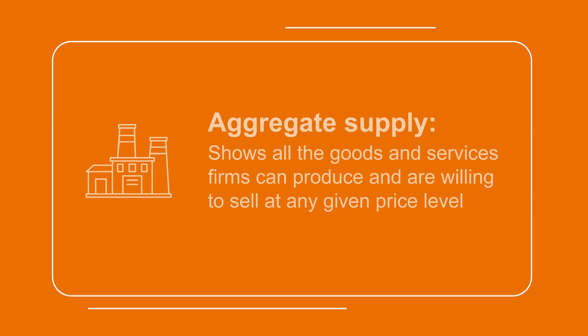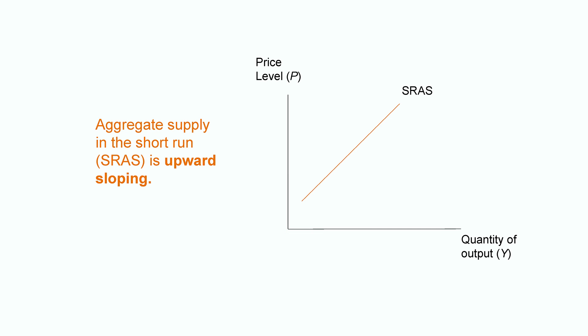Let's start with the definition. Aggregate supply shows all the goods and services firms can produce and are willing to sell at any given price level. Similar to the supply model for any individual good, firms are willing to produce and sell more at higher prices for the product. So there should be a positive relationship between P and Y on the supply side, and the aggregate supply curve is upward-sloping.